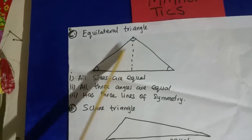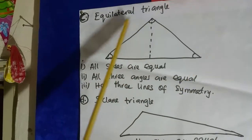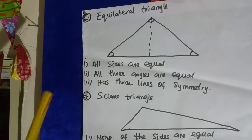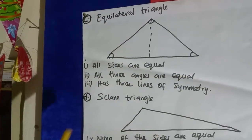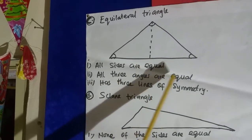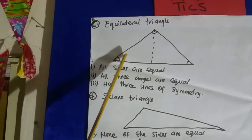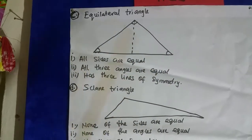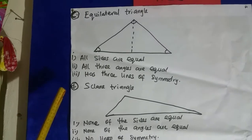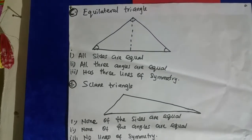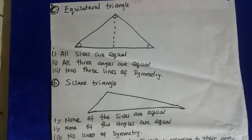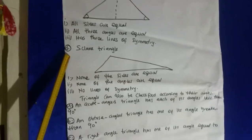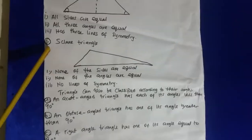All the lines are equal — they are all the same length. All sides are equal, and all three angles are equal. Here is one angle, another angle, and another angle — the three angles are equal.